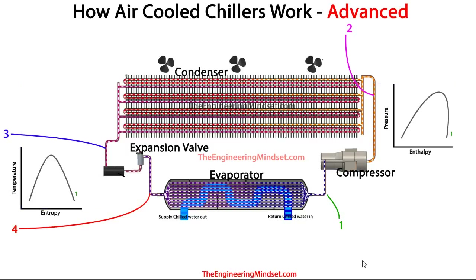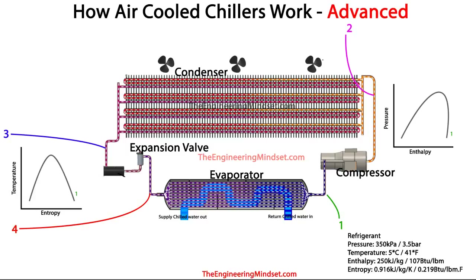If we mark point one on the graphs, please remember that these values may not represent what you have on your chiller in your building — they will almost certainly be completely different, and you should check with your manufacturer. This is just a theoretical educational video. At point one, the refrigerant is a low pressure, low temperature, saturated vapor — around 350 kPa or 3.5 bar at 5°C (41°F), with an enthalpy of 250 kJ/kg (107 BTU/lb), and an entropy of 0.916 kJ/kg·K (0.219 BTU/lb·°F).